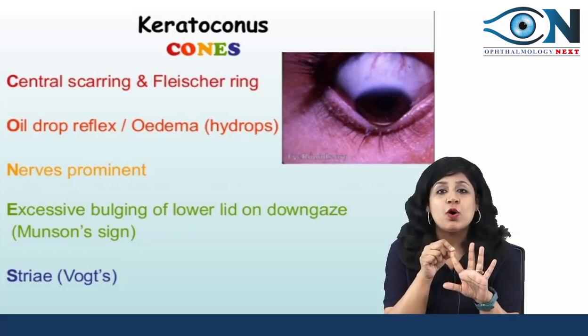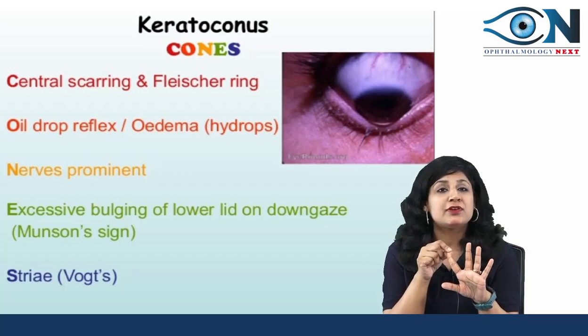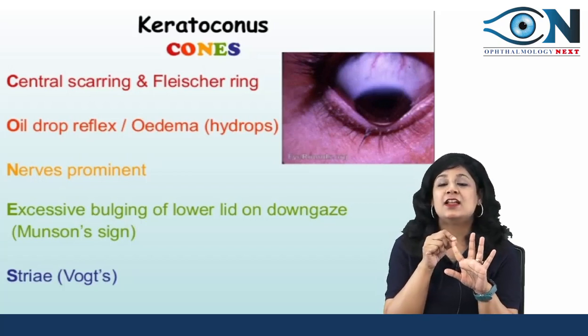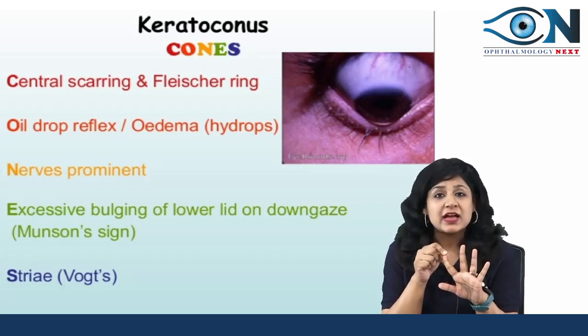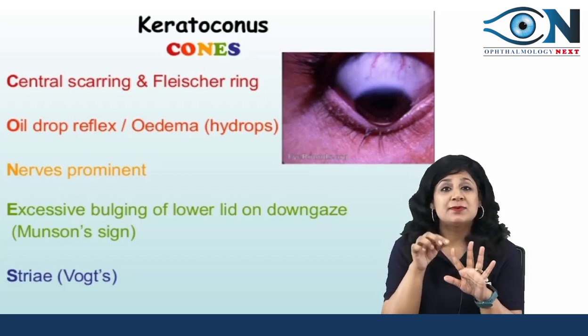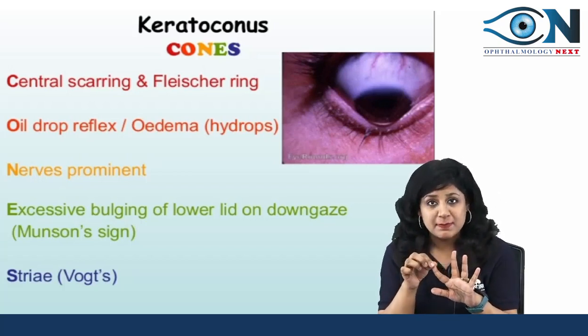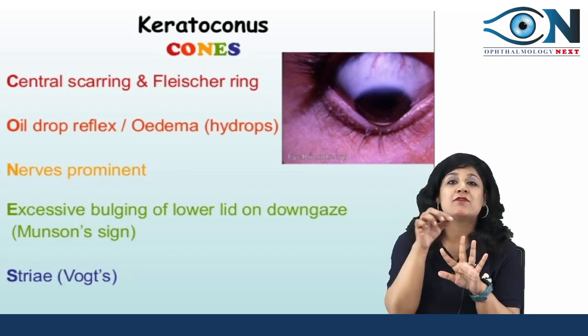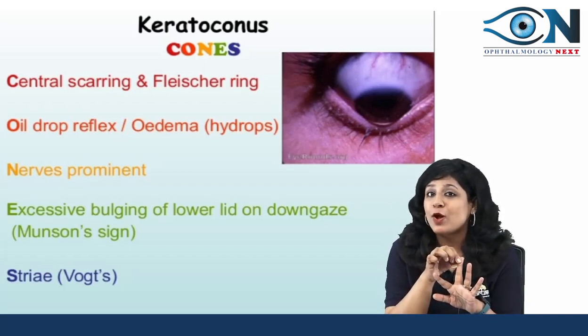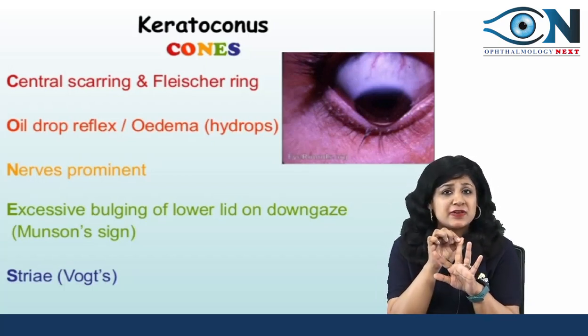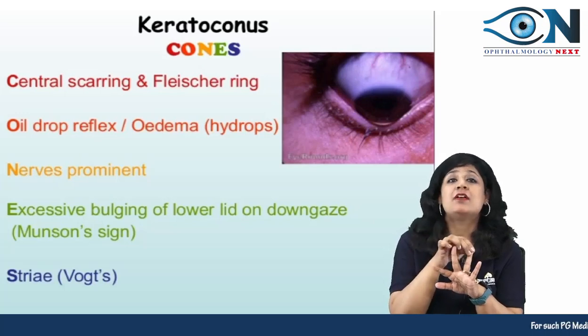Then we have O for oil droplet reflex, along with edema due to hydrops, which is rupture of the Descemet's membrane. Then we have N for nerves being prominent — this is again a very important differential diagnosis.